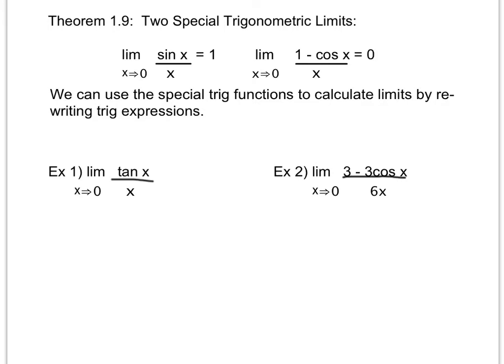Looking at a couple of examples — your unit circle will be helpful here. In Example 1, when I try to plug zero in, I get tangent of zero over zero. Tangent of zero is zero over one, which is zero, so I get zero over zero — that indeterminate form. So direct substitution doesn't work, and I need to rewrite this expression.